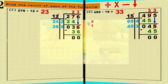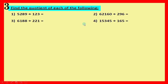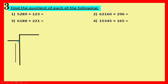Now let's move into today's lesson: dividing by a three-digit number. Find the quotient of each of the following — four problems. The song changes now: when dividing by a three-digit number, we take three digits. Last time we divided by a two-digit number and took two digits; now dividing by a three-digit number we take three digits.